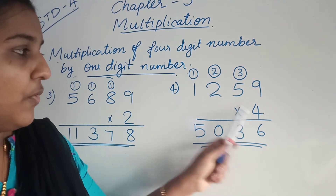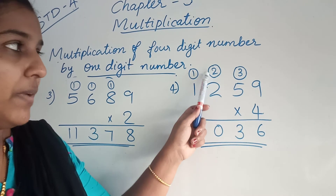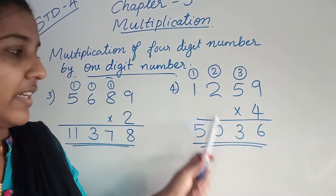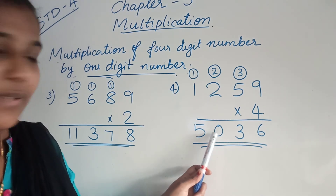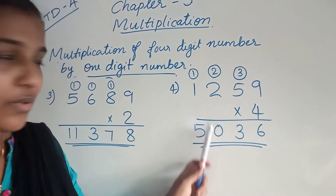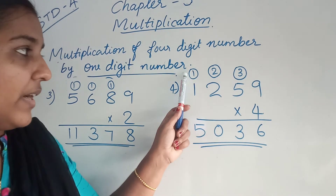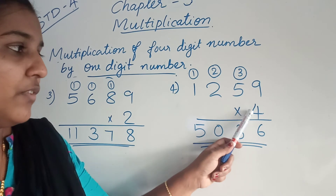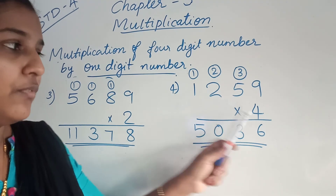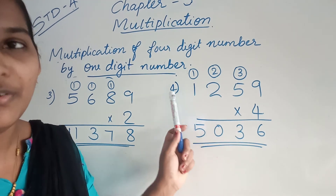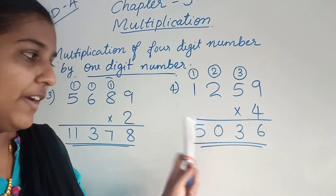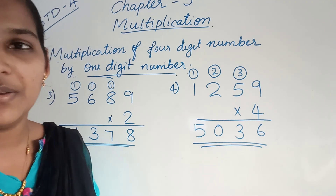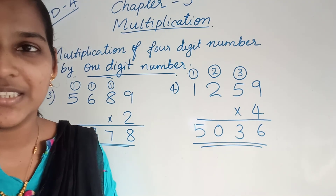Then 4 into 2. 4 twos are 8. 8 plus 2 is 10. From 10, you can write 0 here and 1 carry over to the next place. Then 4 into 1. 4 ones are 4. 4 plus 1 is 5. So the answer is 5,036.